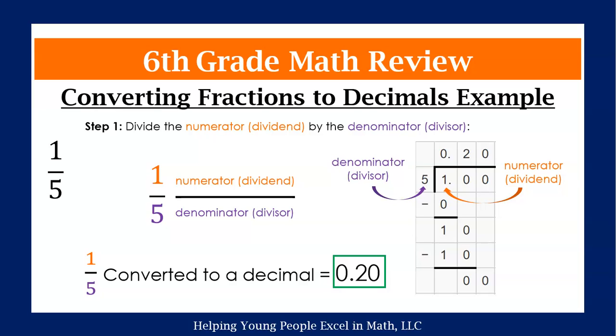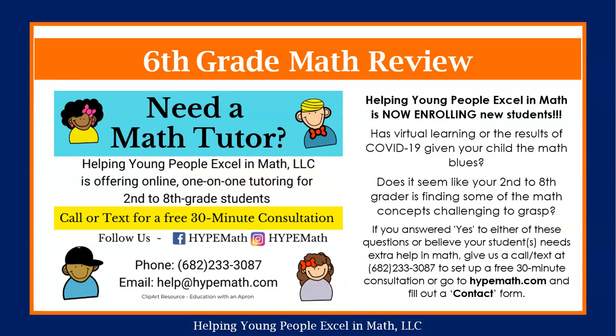So we have 0.20 as our answer. So in long division, one fifth converted to a decimal is equal to 0.20. And that is it for our three strategies of converting fractions to decimals.